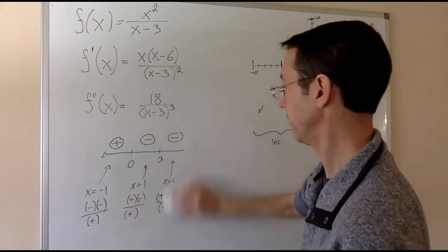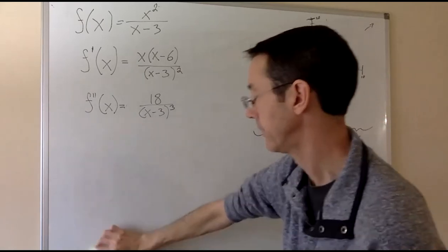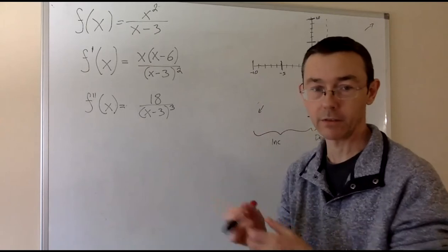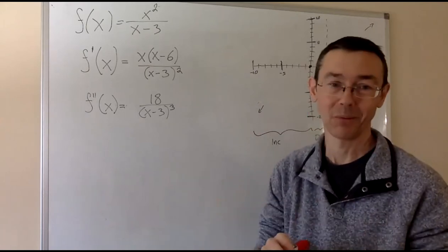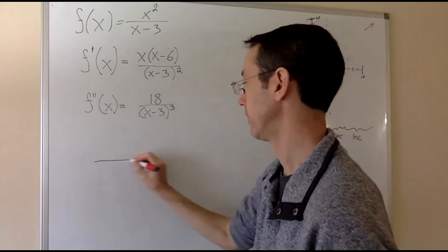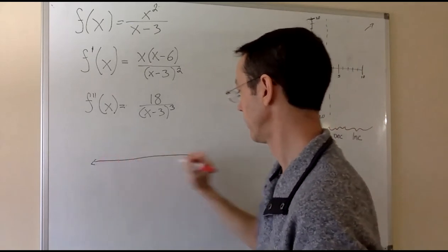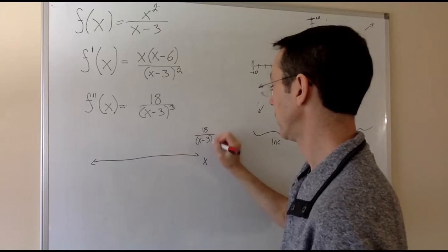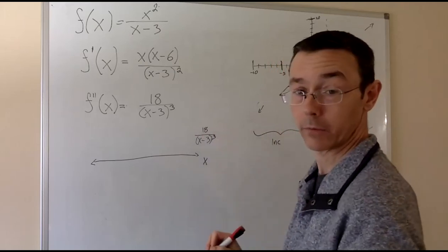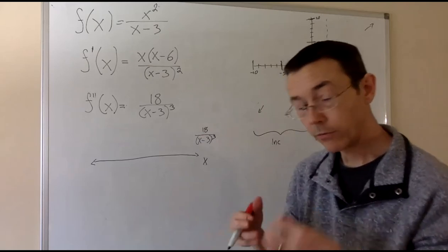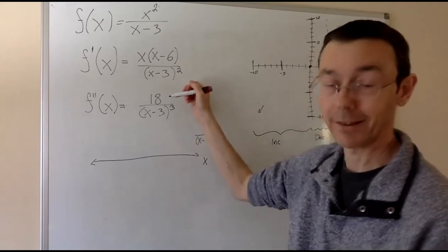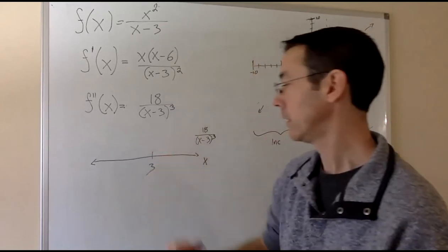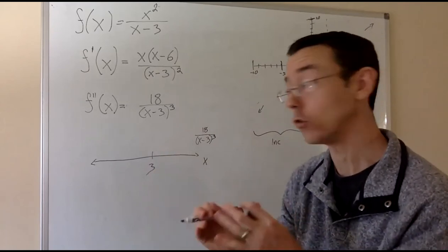Now we've got to look at the second derivative. Now we're making a sign chart for f double prime. We need to know where the second derivative is positive, where it's negative. That's going to tell us where the graph is concave up and where it's concave down. Again, I want to explicitly write down the function that I'm testing. 18 over x minus 3 cubed. This function is only going to have one cut point. The numerator is never 0. 18 is never equal to 0. The denominator is 0 at x equals 3.